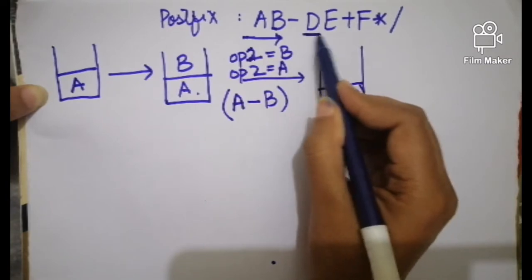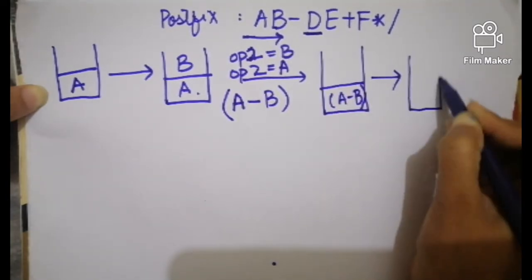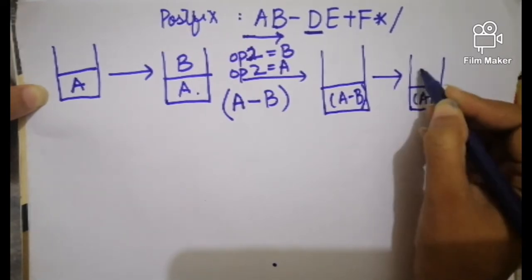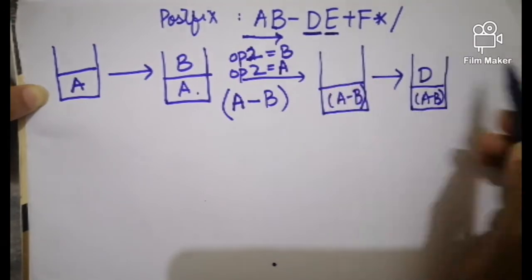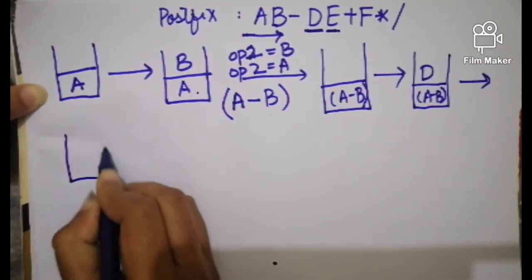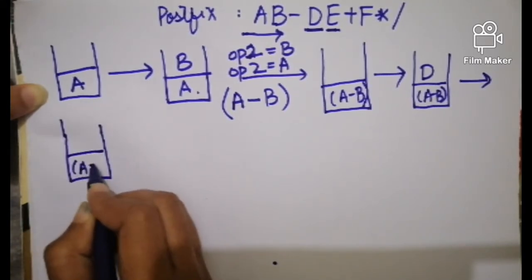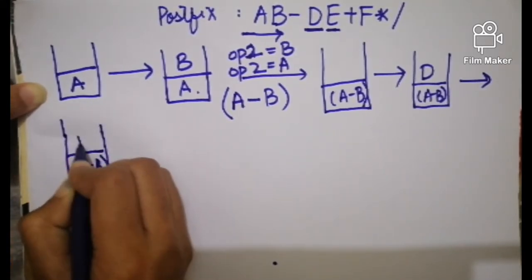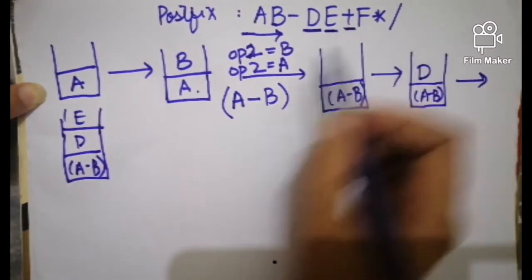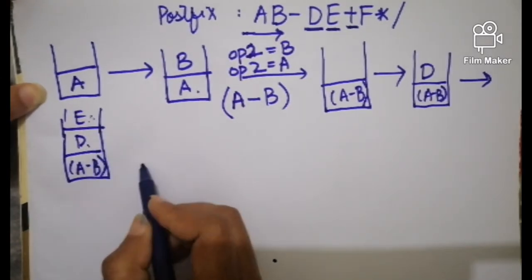The next one is an operand, so simply push it into the stack. The next one is also an operand, so push that operand into the stack as well. Now there is an operator, so we pop the first two operands from the stack.